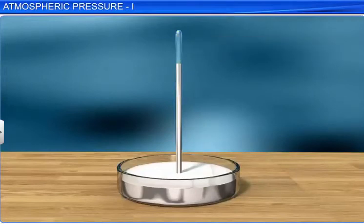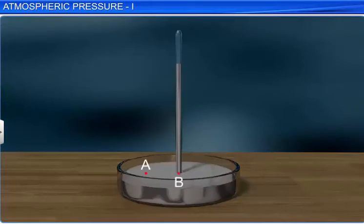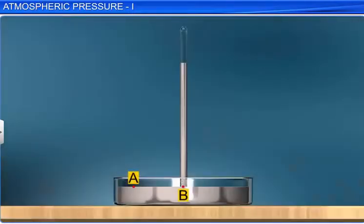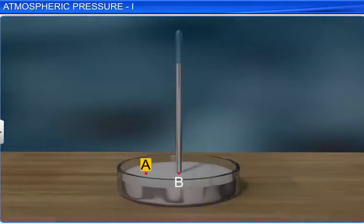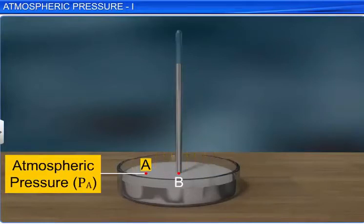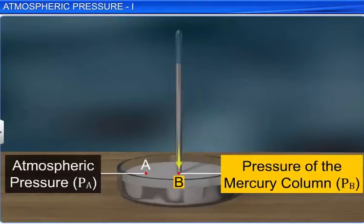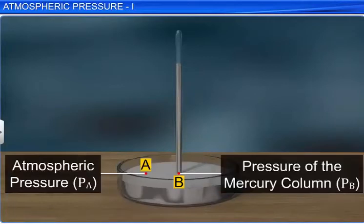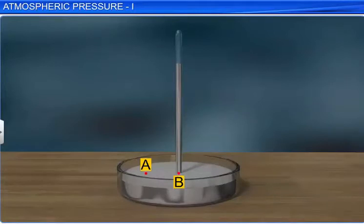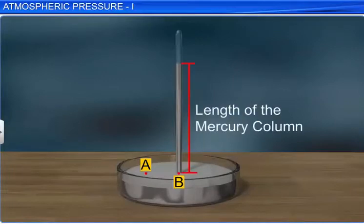Let us consider two points A and B on the surface of the mercury. Both points are at the same horizontal surface. There is air above point A and the mercury column above point B. PA is the pressure exerted by the atmosphere at point A, and PB is the pressure exerted by the height of the mercury column in the tube at point B. Since A and B are on the same horizontal plane, PA is equal to PB. Therefore, the atmospheric pressure is expressed in terms of the length of the mercury column.